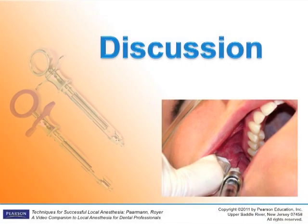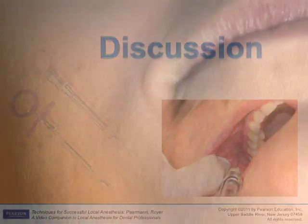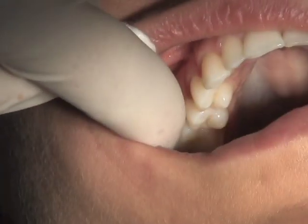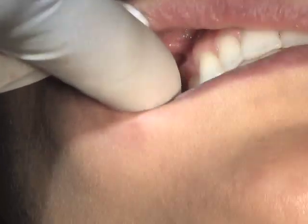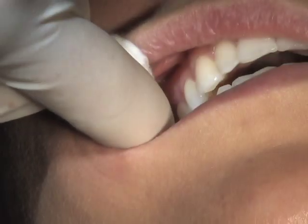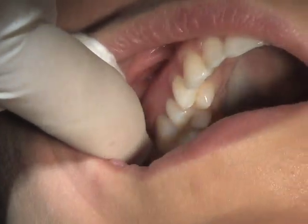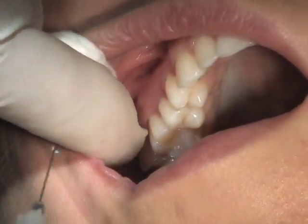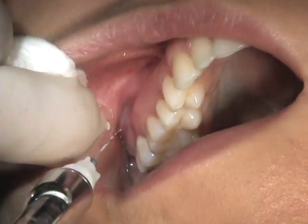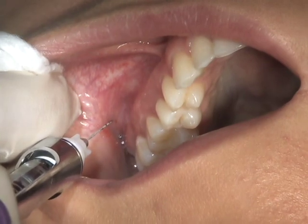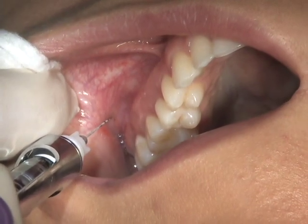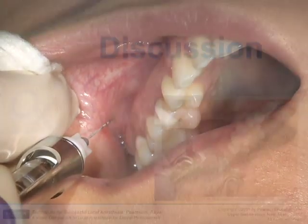Good tissue retraction is critical to achieving the proper angulation for this injection. For maximum visibility, have the patient jet his or her jaw toward the side of the injection as the cheek is swept upward and outward in retraction. Do not retract just from the corner of the mouth.